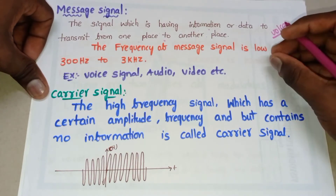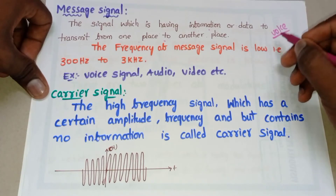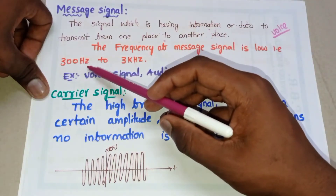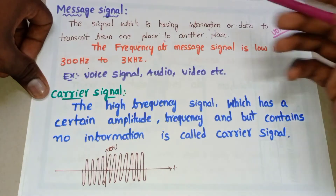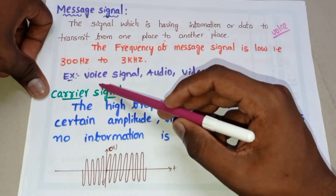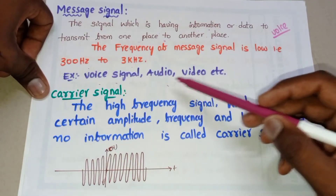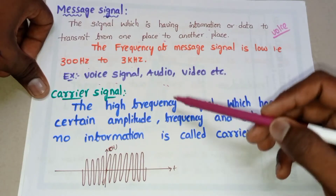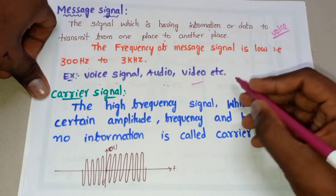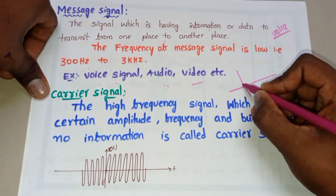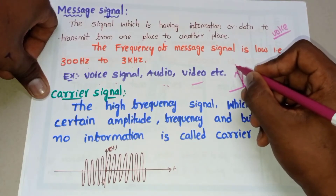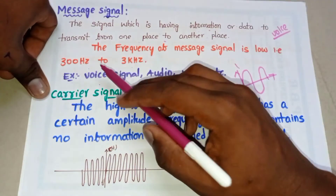Consider our voice signal — our voice signal is also a message signal. When we are talking to anyone on a phone, our voice signal is a message signal. The frequency of our voice signal is very low, in the range of 300 Hz to 3 kHz. Examples of message signals include voice signals, audio signals, and video signals. The message signal waveform shows this low frequency, ranging from 300 Hz to 3 kHz.